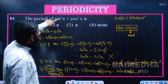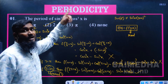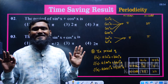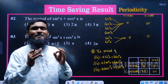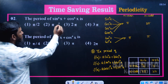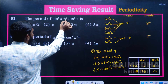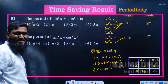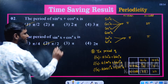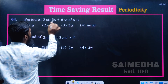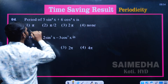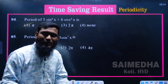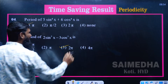Applying the shortcut to the original question sin³x + cos³x: a = 1, b = 1 so a = b, and n = 3 which is odd. For odd n, the answer is directly 2π. You can solve this within a few seconds just by identifying whether n is odd or even and whether a equals b.